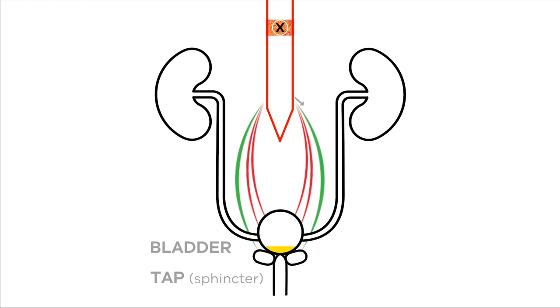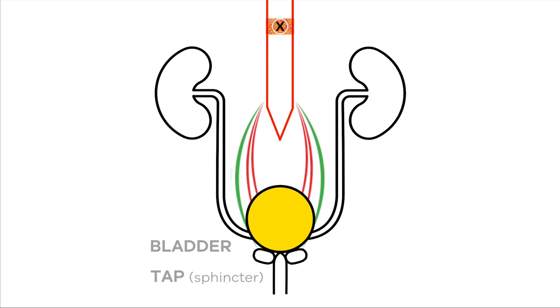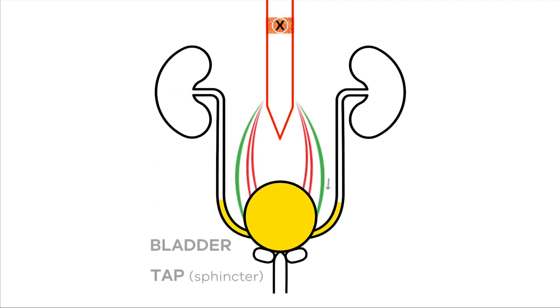The tap is held tight so nothing leaks out. At this stage, the pressure in the bladder is low. The bladder starts to fill up and tries to empty using the automatic nerves, but the brain doesn't get the message due to the spinal injury.